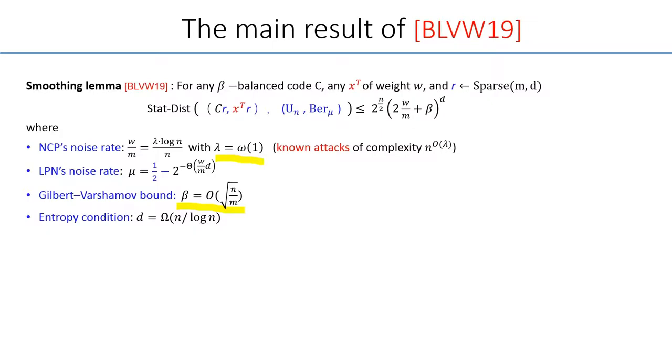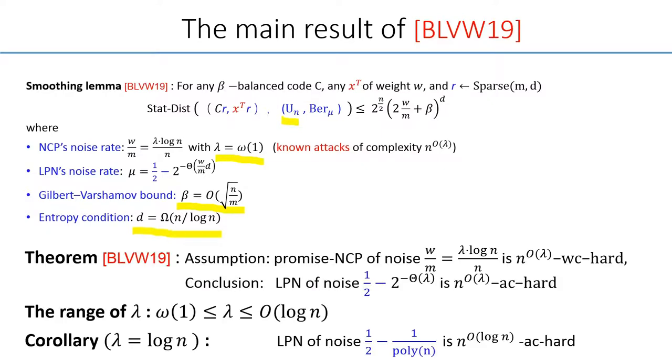Finally, the problem can be seen as extracting N random bits from source R in presence of noise. So there is a lower bound on the sparsity of the random distribution. The end result of BLVW is that, assume the quasi-polynomial worst-case hardness for NCP on extremely low noise balanced code.